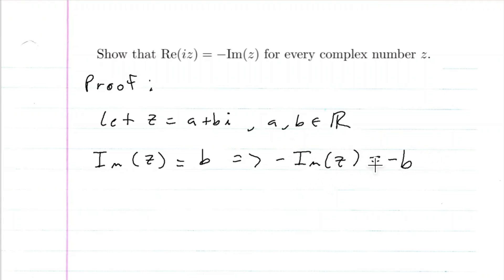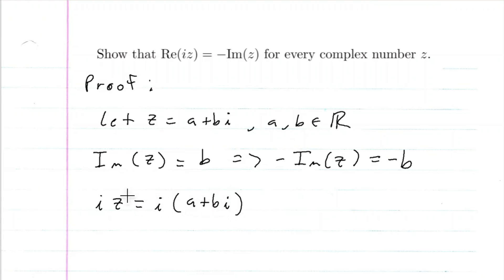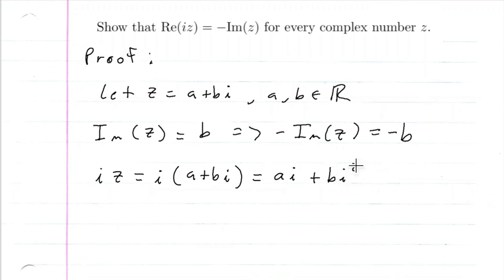So apparently the real part of i times z is equal to negative b, which equals the negative imaginary part of z. Let's look at what i times z is. i times z is going to be i times (a plus bi), because we know z is a plus bi. So i times a is ai, plus i times bi will be bi squared.